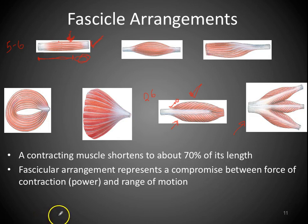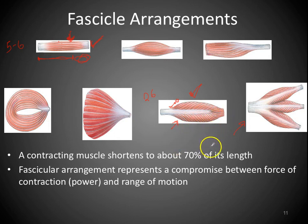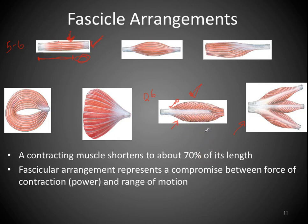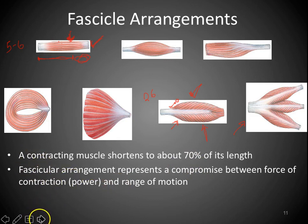Just as an aside: in crustaceans — crabs, lobsters — the skeleton is on the outside, so they can't have large bulging muscles. To achieve strong grip in their claws, their muscle arrangements are pennate type. Next time you're eating lobster or crab, take a look at how the claw muscles are actually attached.